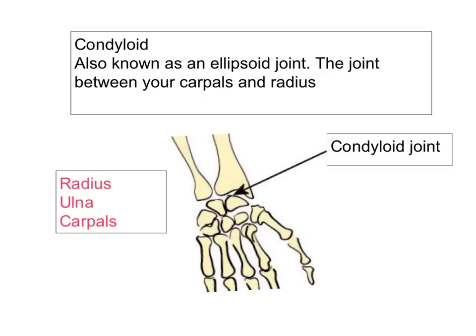The condyloid joint is also known as the ellipsoid joint. It's the joint between your carpals and your radius — these are the carpals here and there's your radius, and this is your ulna. And there you can see the condyloid joint marked in there.